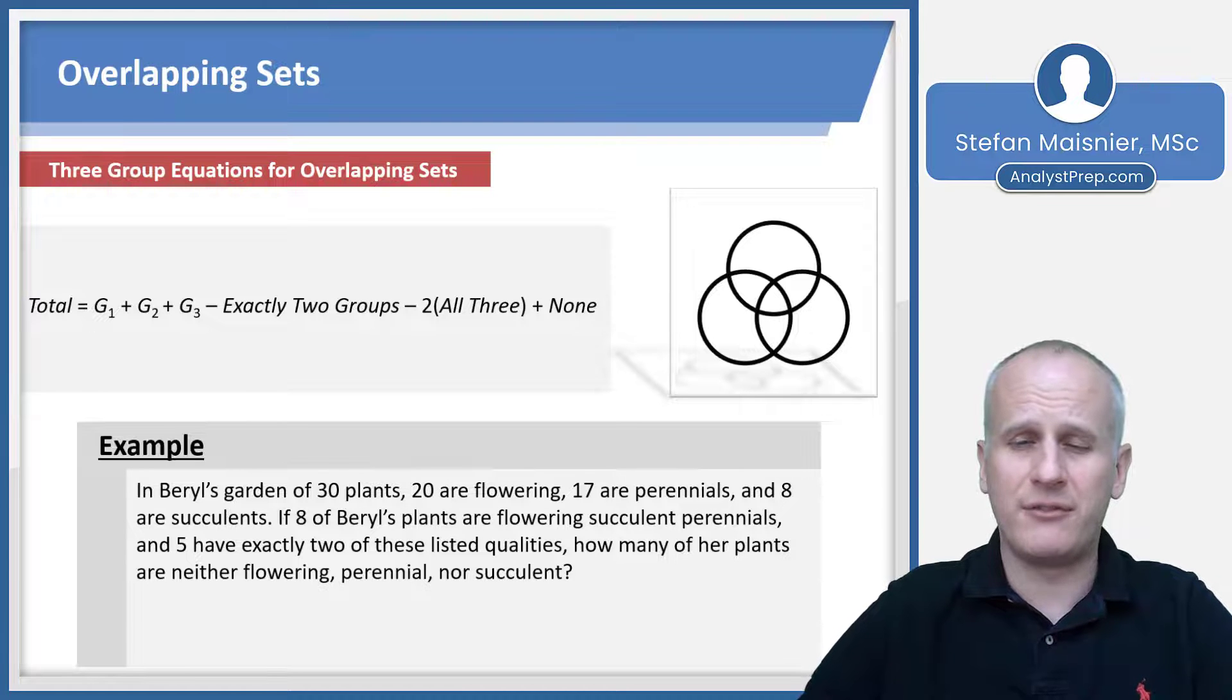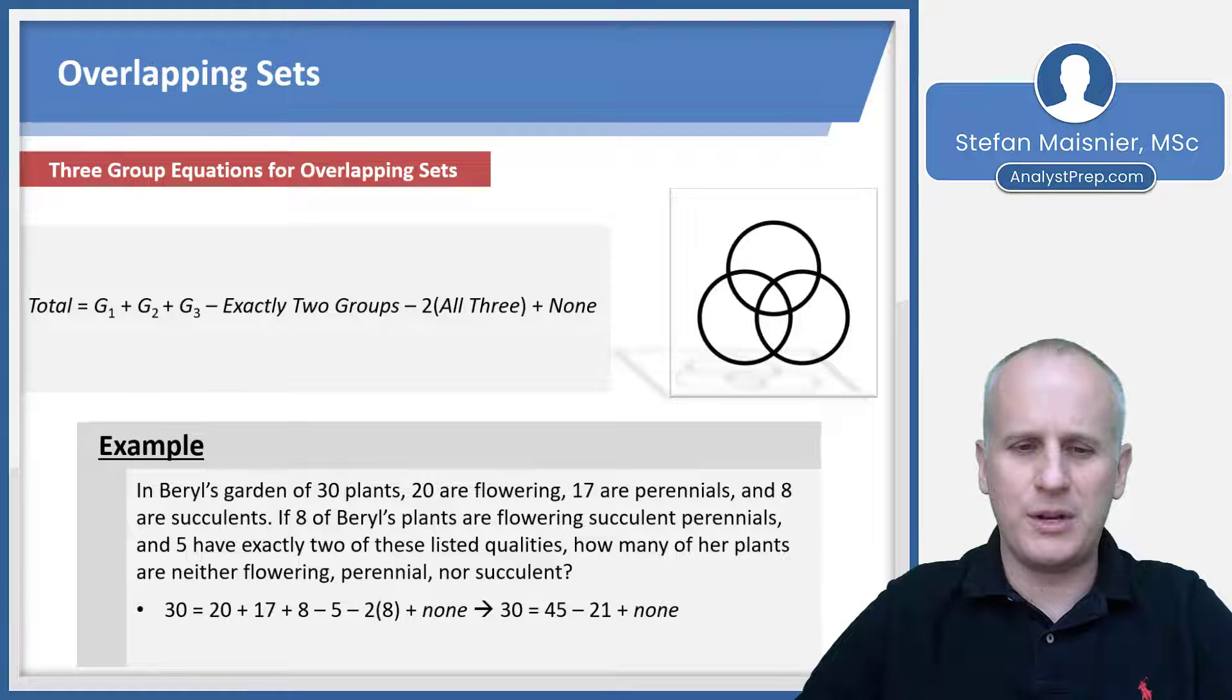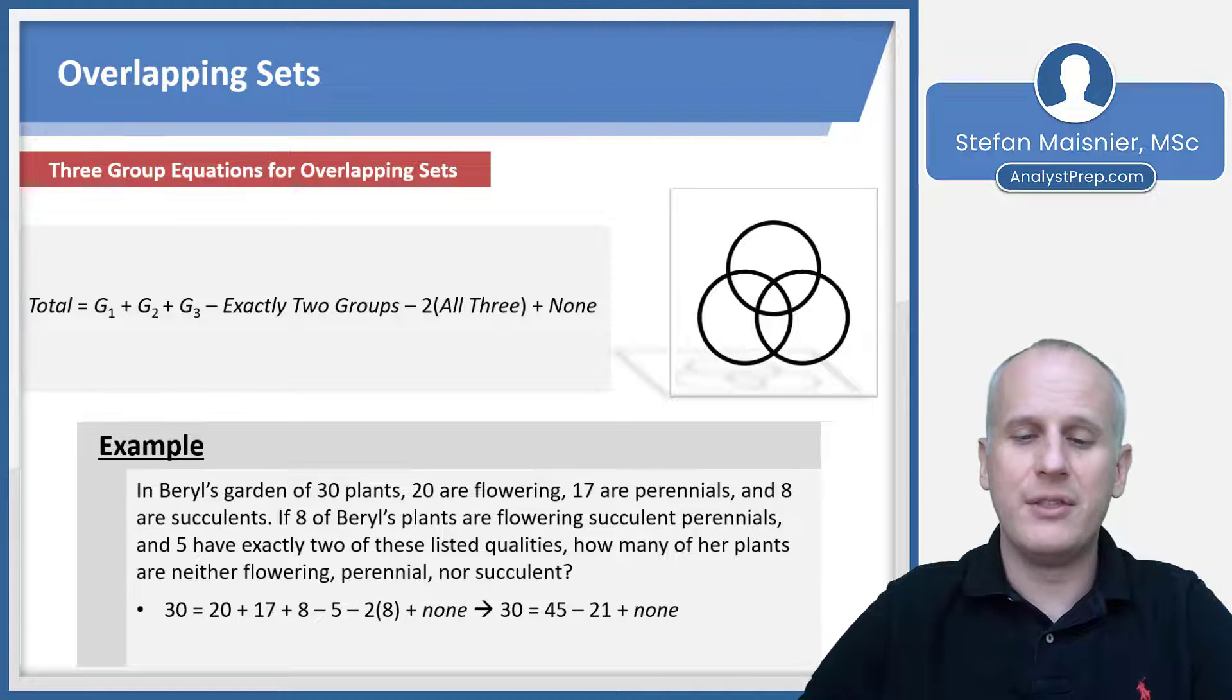We're ultimately being asked to solve for those that are none. So we start to fill in the pieces of the equation. We know 30 is the number of plants. That's our total on the left-hand side of the equal sign. Then we know 20 is group one, 17 is group two, eight is group three. We then know that exactly five have exactly two of these qualities. So we subtract out that five and then we have eight of the plants that are flowering succulent perennials that categorize themselves in all three of the groups. So we have to multiply that eight by two when we subtract it to make sure we don't triple nor double count this group plus those that are none.